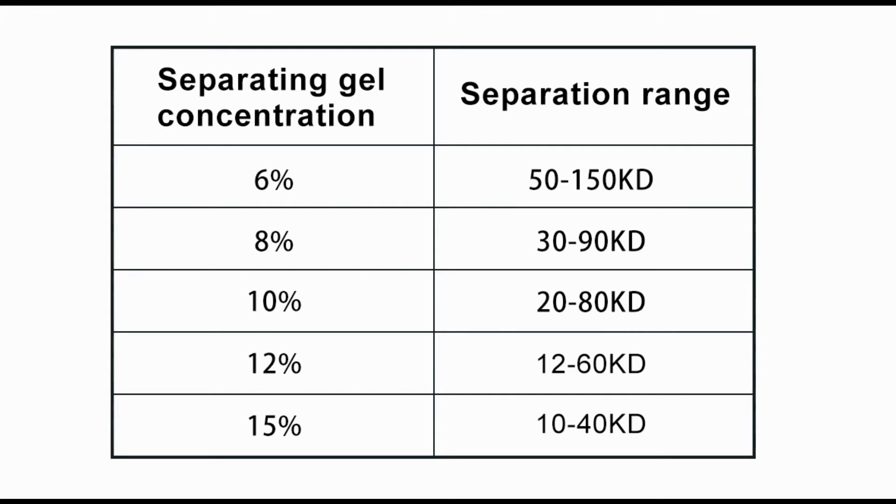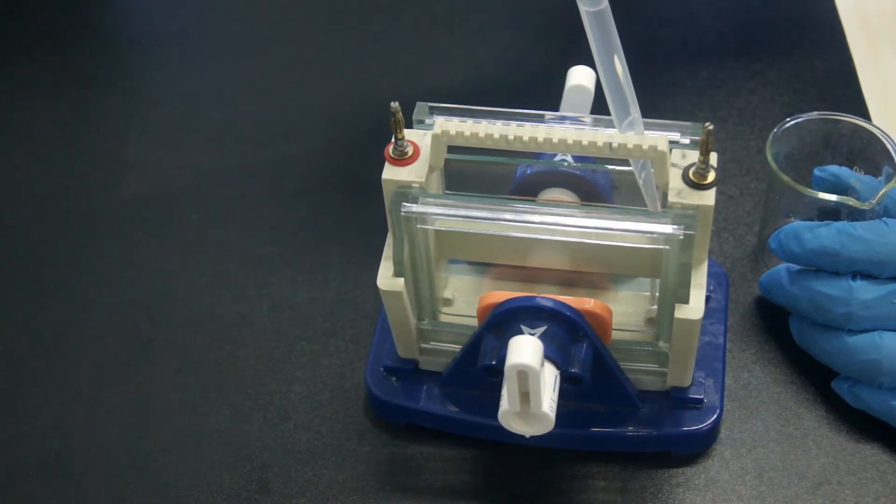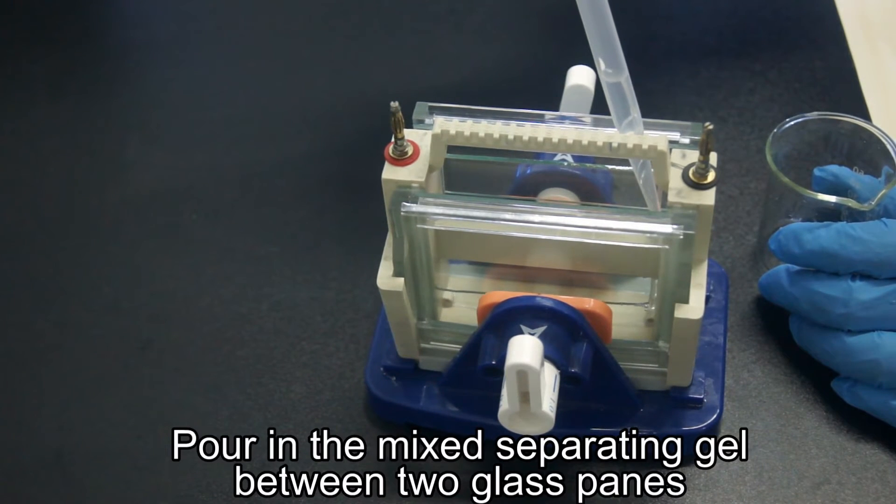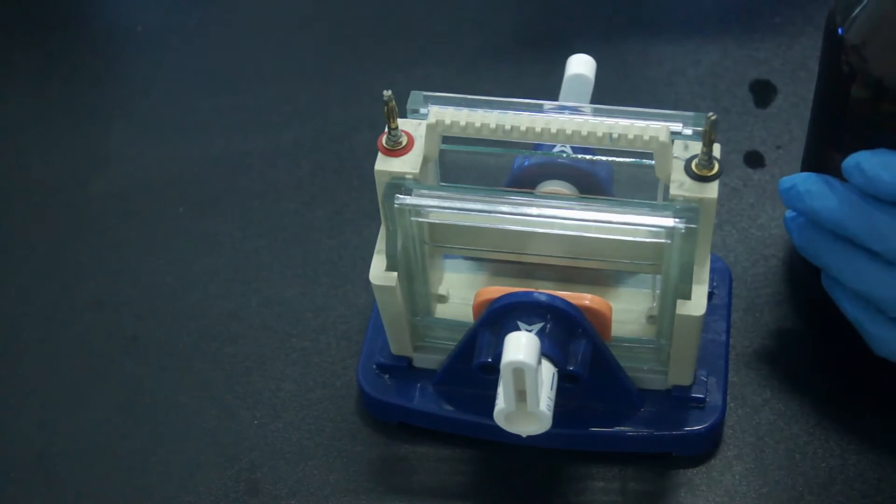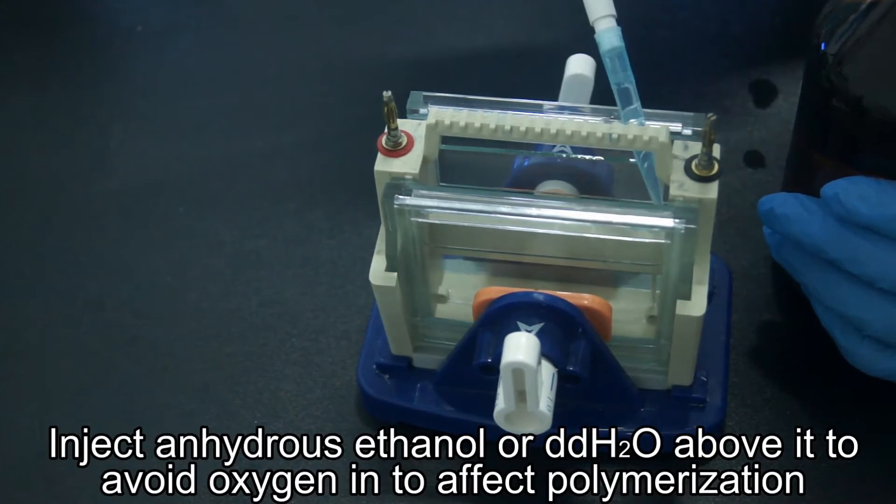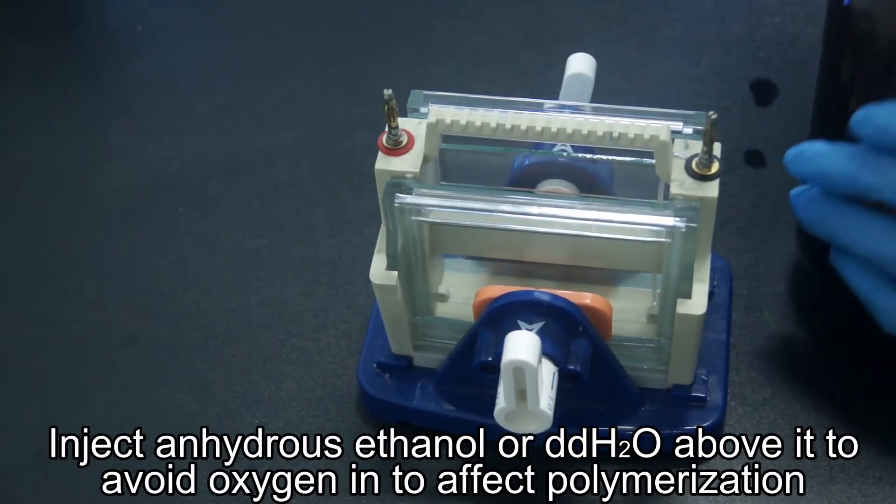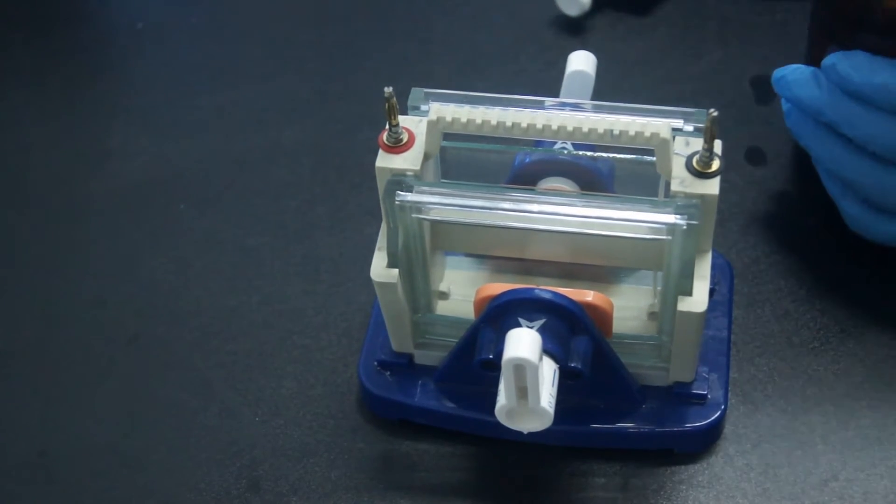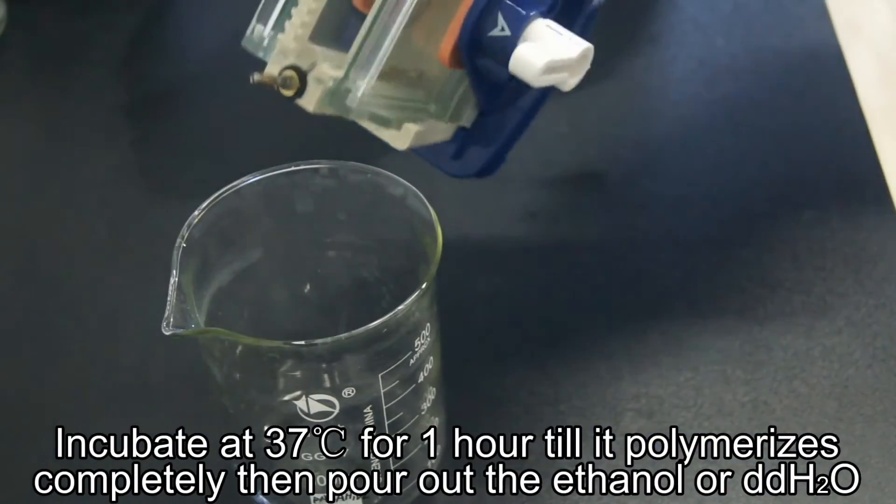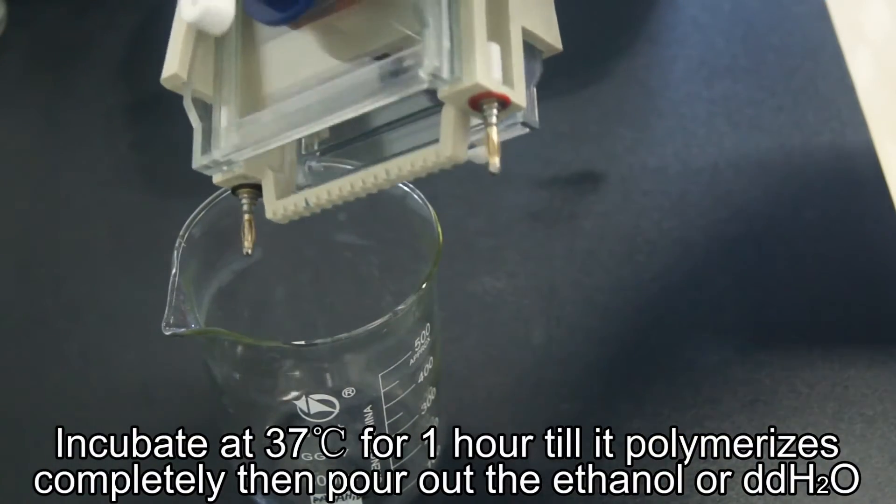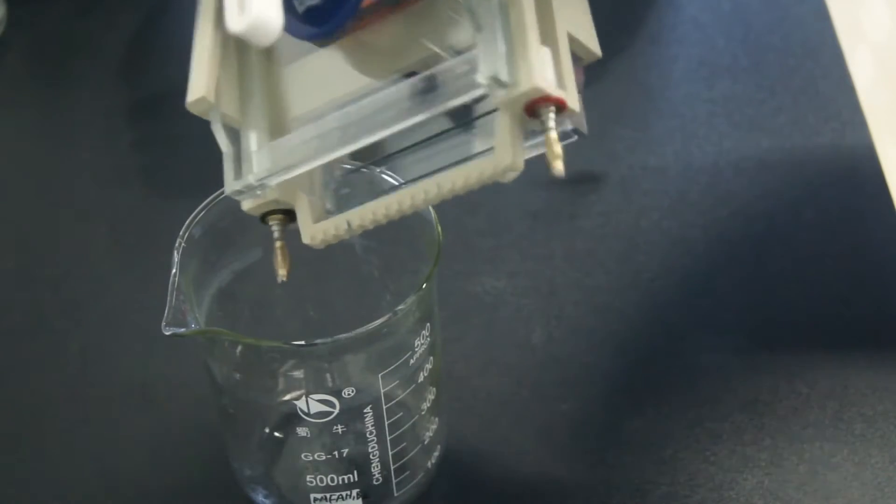SDS PAGE gel preparation: Pour the mixed separating gel into the gel tank between the two glass panes to about 2 cm below the top of the plastic holder. Inject anhydrous ethanol or DDH2O above it to avoid affecting polymerization. Incubate at 37 degrees centigrade for 1 hour till it polymerizes completely. Then pour out the ethyl alcohol.